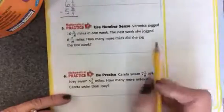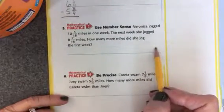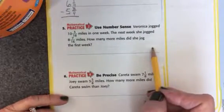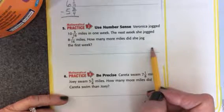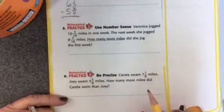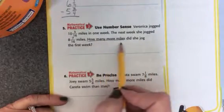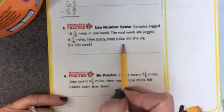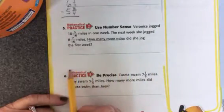Let's look at number 5. Veronica jogged 10 and 3 16ths miles in one week. The next week she jogged 8 and 7 16ths miles. How many more miles did she jog the first week? How many more are key words that tell us to subtract. So you'll write it down and subtract.